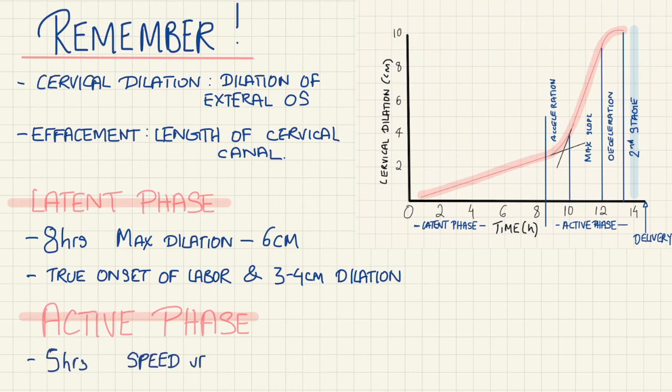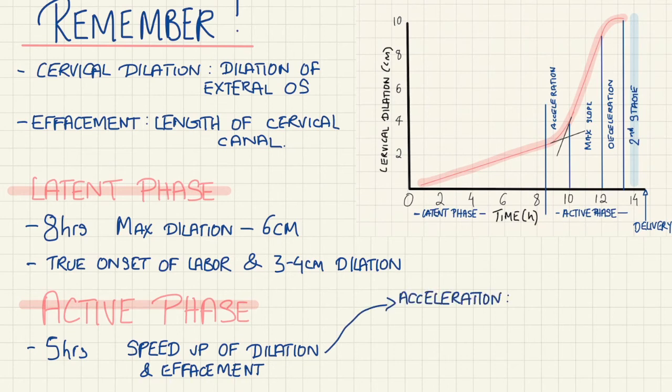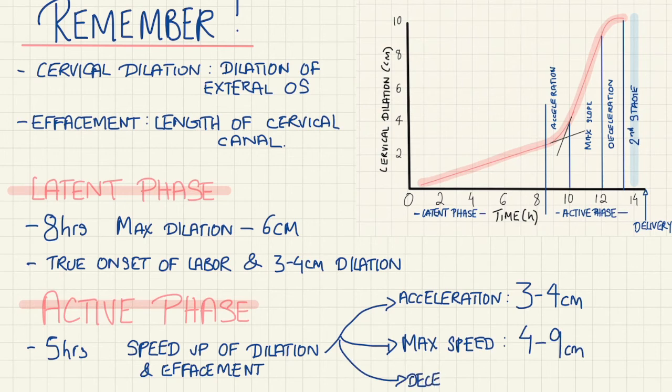Active phase is usually five hours and speeds up. It's further split into acceleration, maximum speed, and deceleration. You can find on screen the different types of centimeters of dilation that take place in each of these segments.